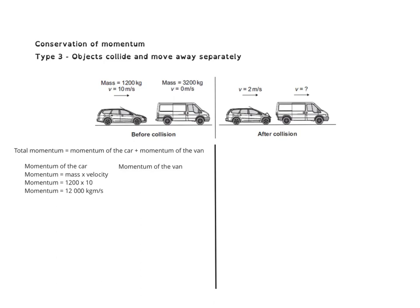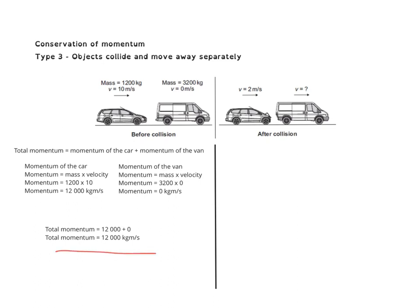Now for the momentum of the van: momentum equals mass times velocity, which is 3,200 kilograms multiplied by 0, giving a momentum of 0. So the total momentum before the collision is 12,000 plus 0, which equals 12,000 kilogram metres per second.